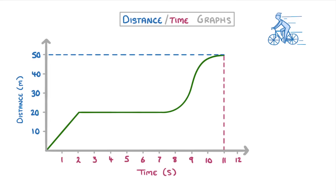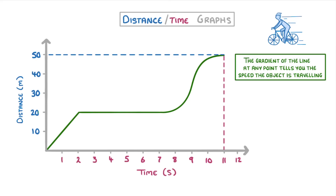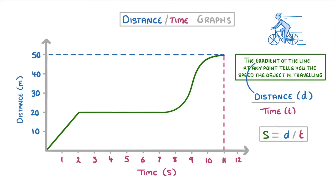The most important thing to know is that the gradient of the line at any point tells you the speed that the object is traveling at that time. This is because the gradient is equal to the change in distance divided by the change in time, which is the formula for speed. So just remember that on a distance time graph, the gradient is always equal to the speed.